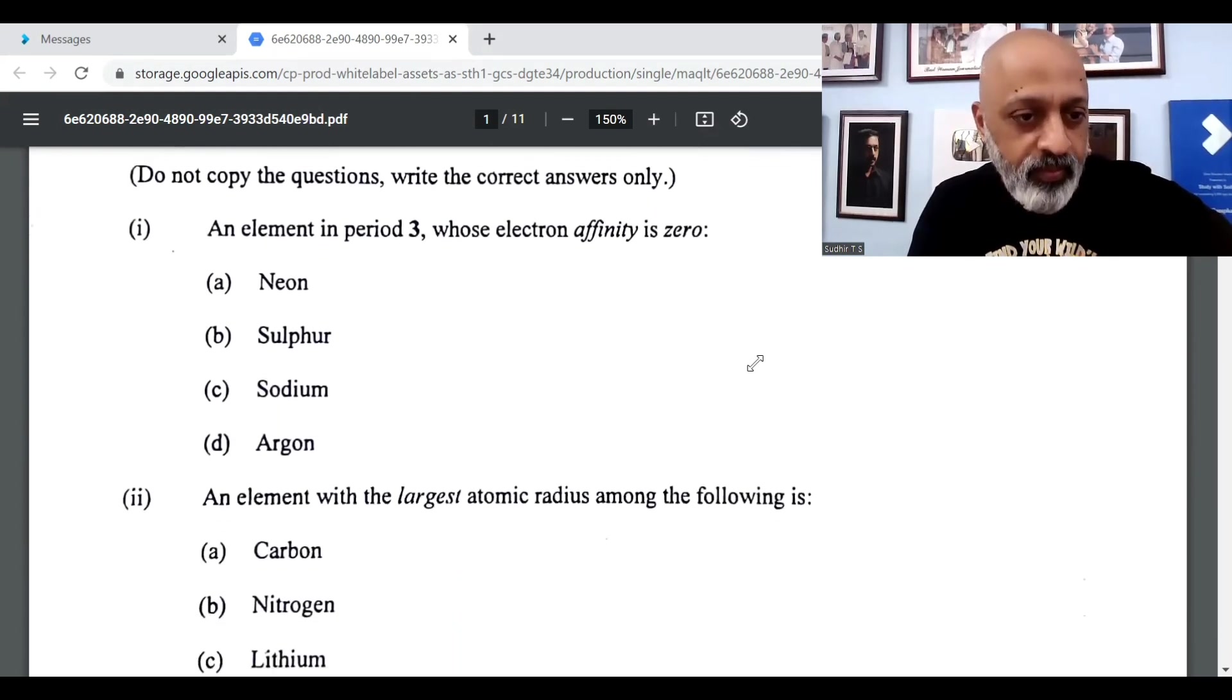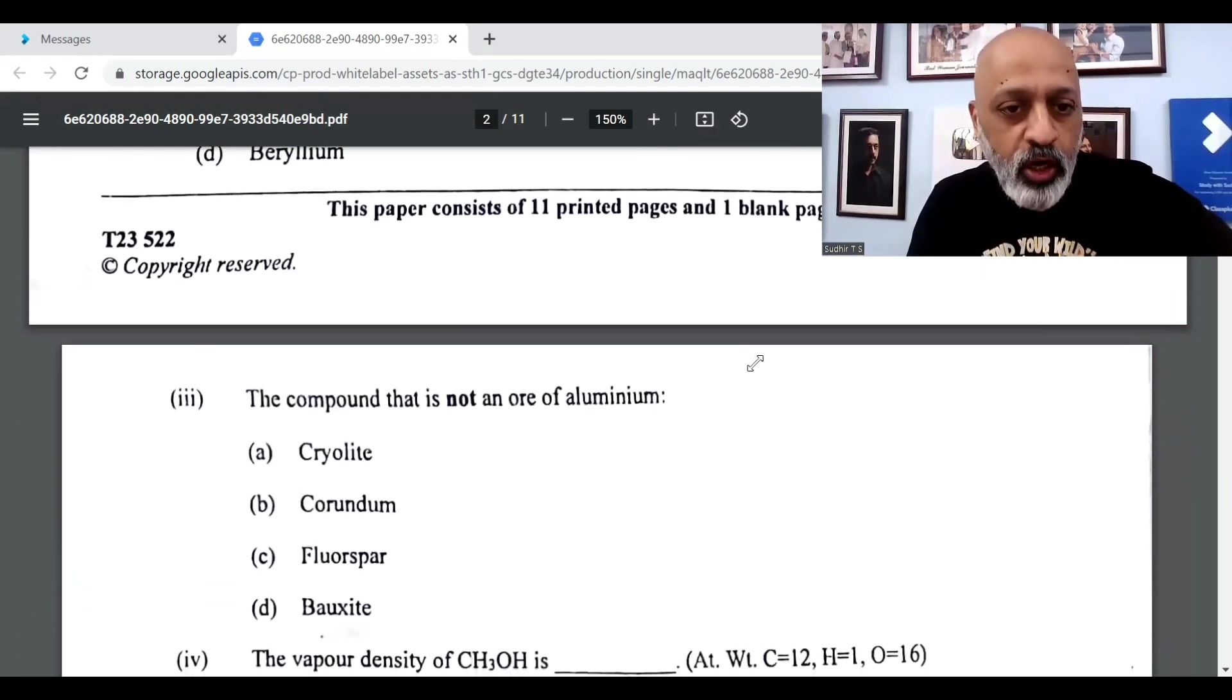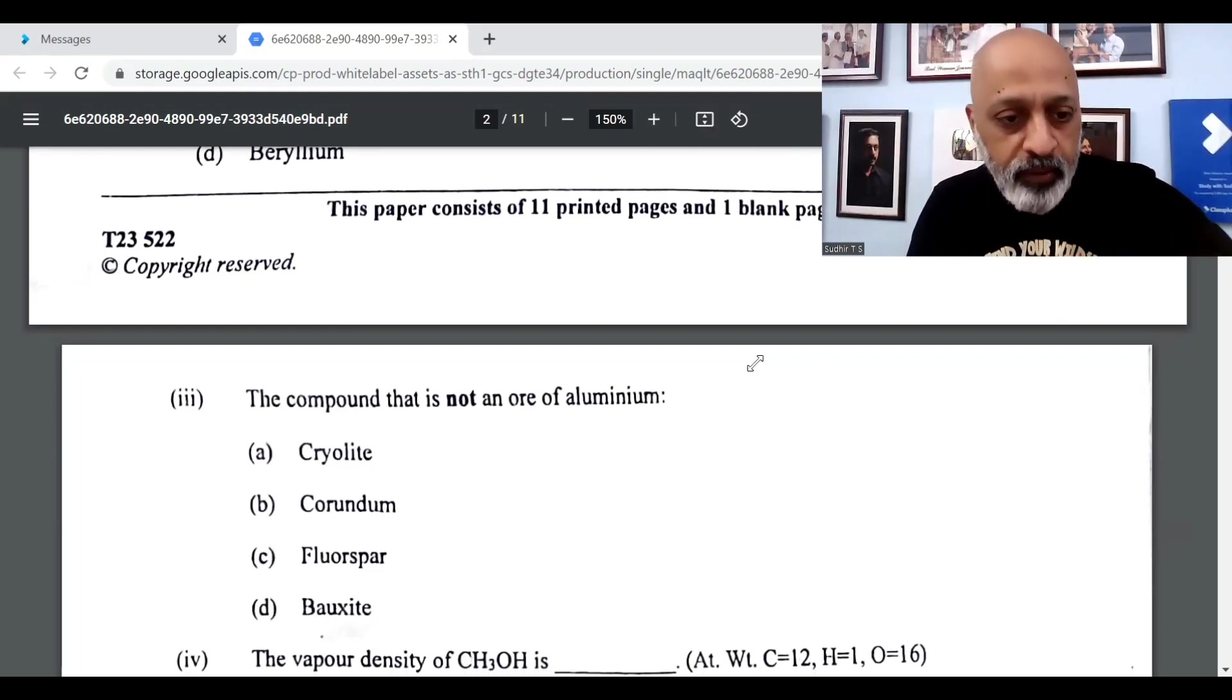So 1D. Second question, an element with the largest atomic radius among the following is Lithium-C. The compound that is not an ore of aluminium is C-Fluorspar.